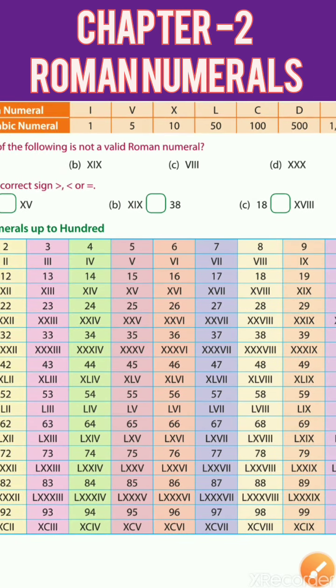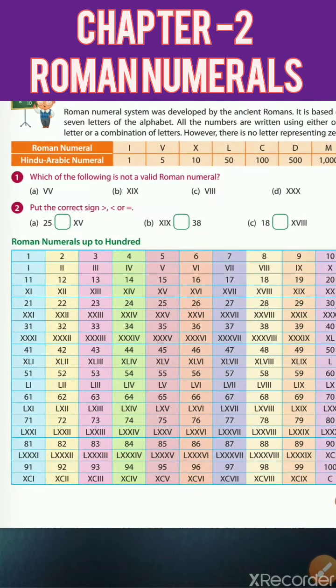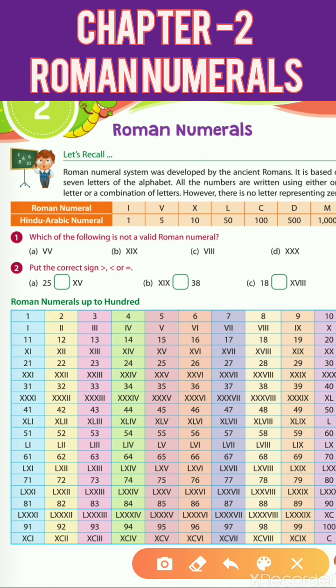Now students, this is a Roman numeral chart up to 100 counting. You can tell one number one which is a Roman numeral, so you have to create a chart as it is. Now come to the next page.